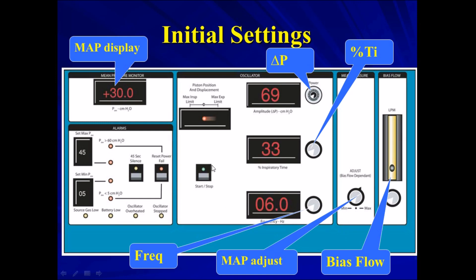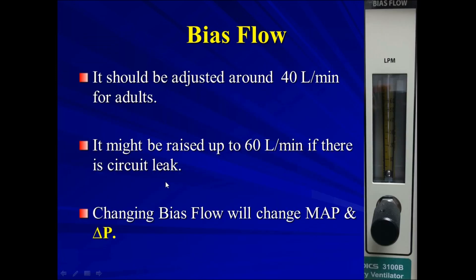Here we can start the machine and start the oscillation. For the bias flow, it should be adjusted around 40 liters per minute for adults, and for pediatric it's around 20 liters per minute.